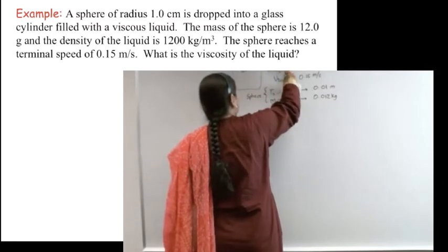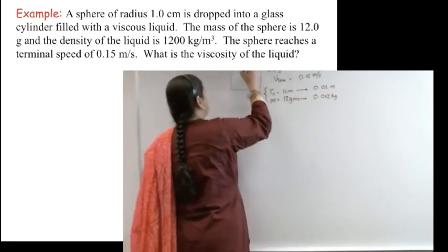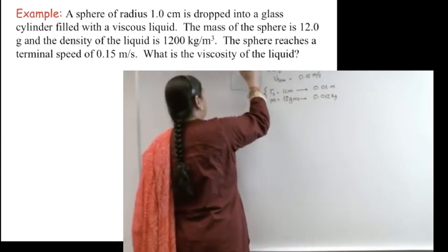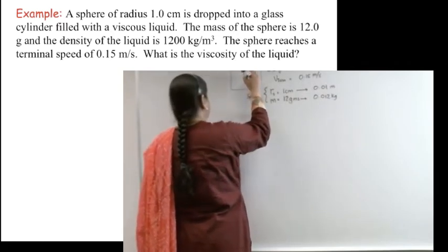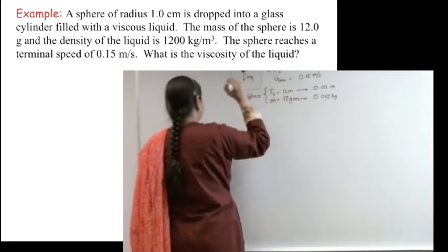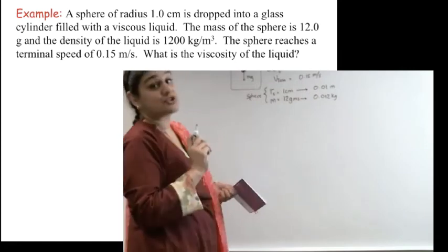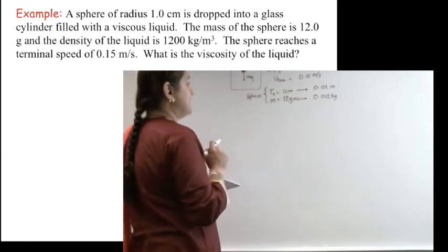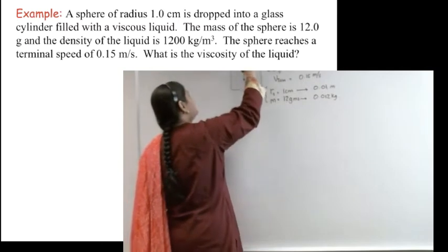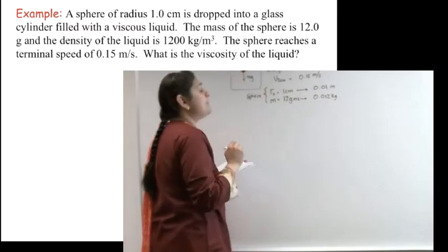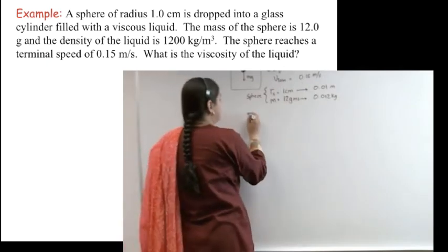In order to solve this problem, what I need to do is draw a free body diagram. What are the forces that are acting on it? One of them is going to be mg and buoyant force. Now, the next question is, since this actually has drag, what direction should the drag be? If I drop this object, the drag has to be upwards because it opposes the motion, the direction of motion.